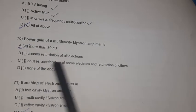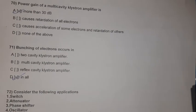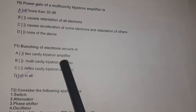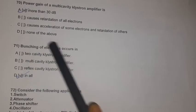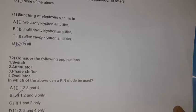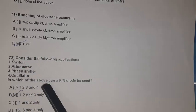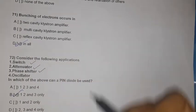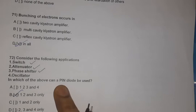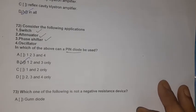Question 69: Bunching of electrons occurs in all cavities — two-cavity, multi-cavity, and reflex. Question 70: A PIN diode can be used as a switch, attenuator, and phase shifter — options 1, 2, and 3 only.